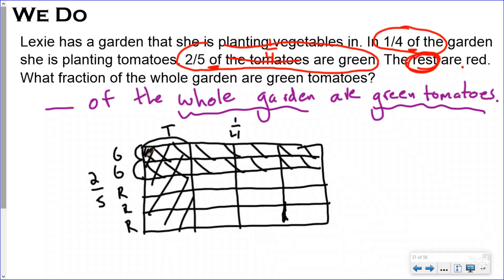And when I count the pieces that were shaded in twice, I see that there were only two. So I'm going to say that two out of one, two, three, four, five, and then five, ten, fifteen, twenty pieces. Two-twentieths of the whole garden are green tomatoes. And of course you could simplify that as one-tenth. So really one-tenth of the whole garden are green tomatoes.